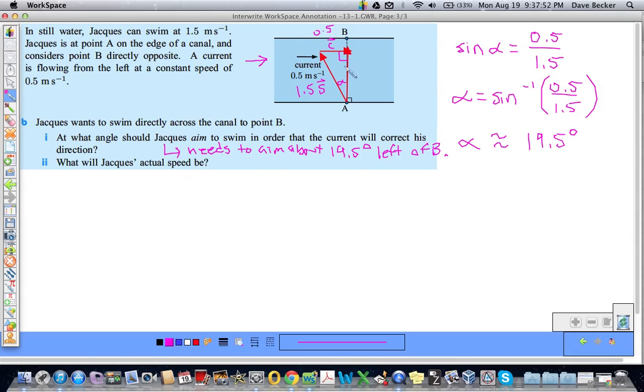Because that will push him right back on line with B. If he aims this way, the current will push him back into a straight line with B. What will Jacques's actual speed be? Well, his speed is simply the magnitude of this vector. I'll call it, let's say, I don't want to call it R again, so I will call it S. No, I can't do it S for speed. I'll call it A for actual speed. Well, this is simple.